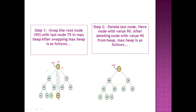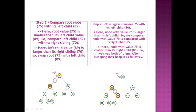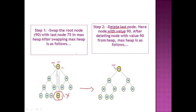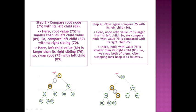After the swap, we delete the root node — but now the old root 90 is at the leaf position, so we simply delete that leaf node. The node with value 90 is now deleted. After deletion, we check the heap property. The third step is to compare the new root node 75 with its left child.